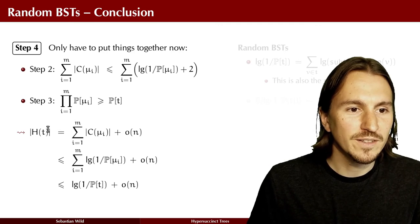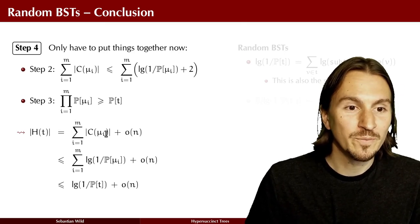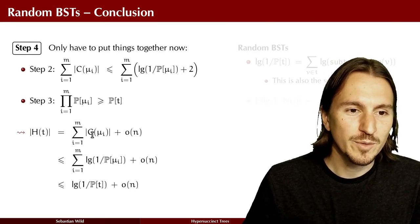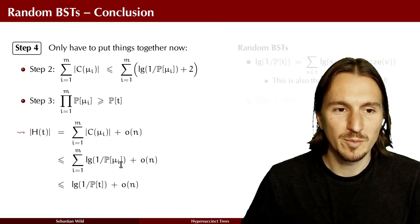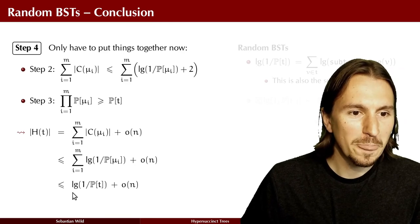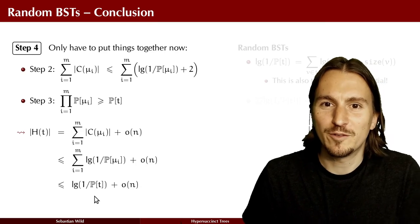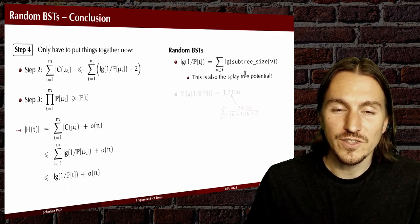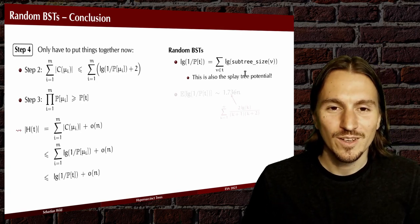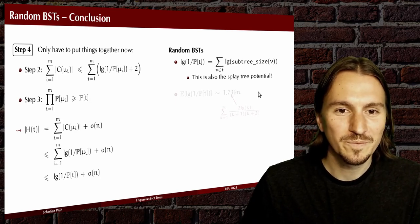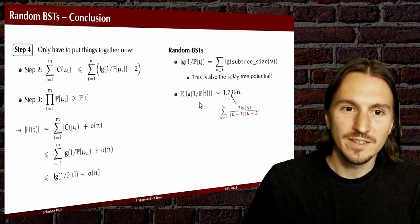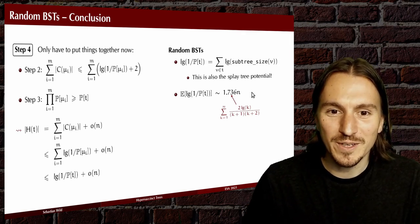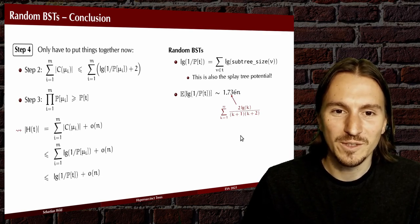Putting these together gives our first result: the size of the encoding in our hyper succinct code is what we need for the Huffman code plus little-o of n for storing how the micro trees fit together. Using step two we upper-bound its length by log of one over the probability for each micro tree, and using step three this is at most log of one over the probability for the entire tree. For random binary search trees we can rewrite this probability as the sum of the logs of all the subtree sizes — recognizable as the splay tree potential — and the expected space needed is 1.736n, substantially less than 2n.